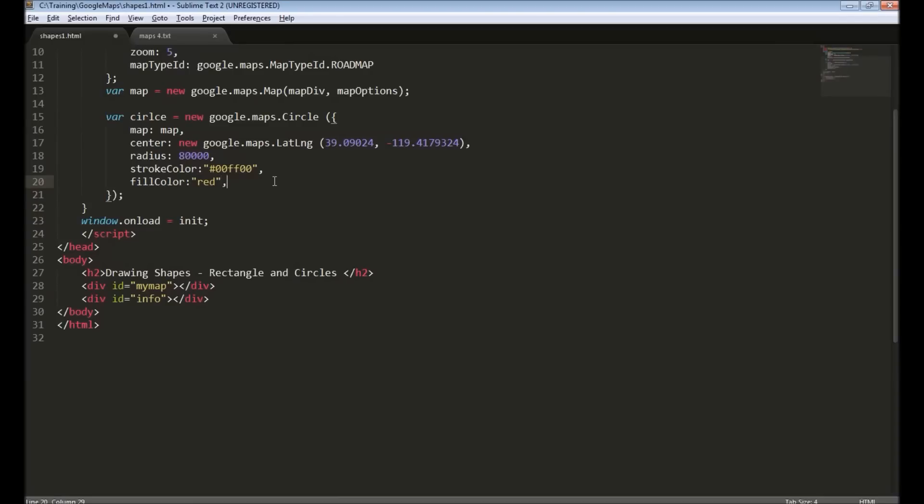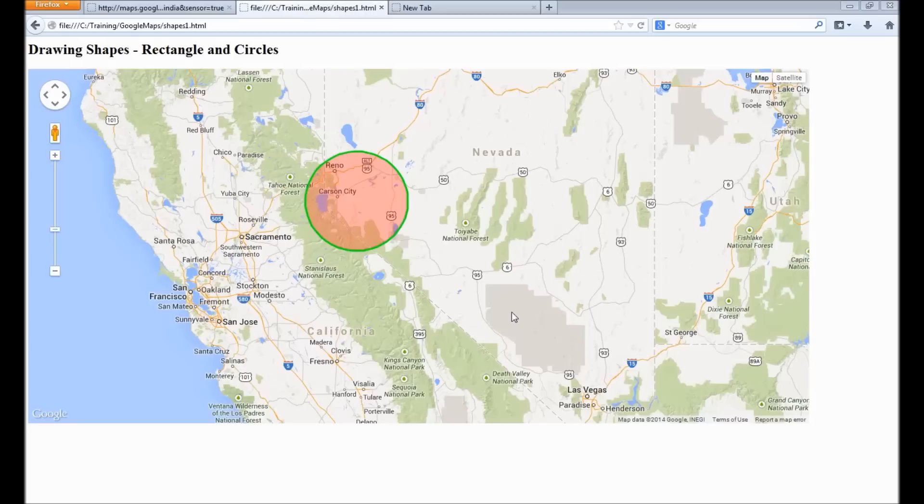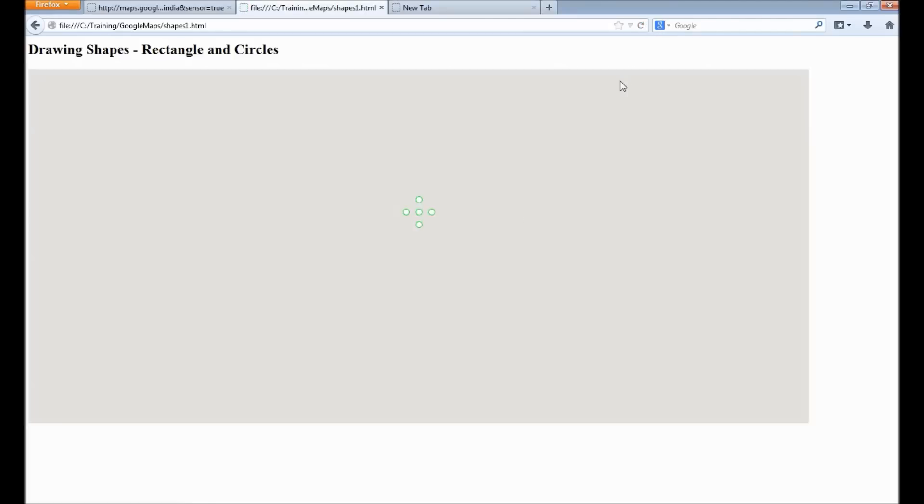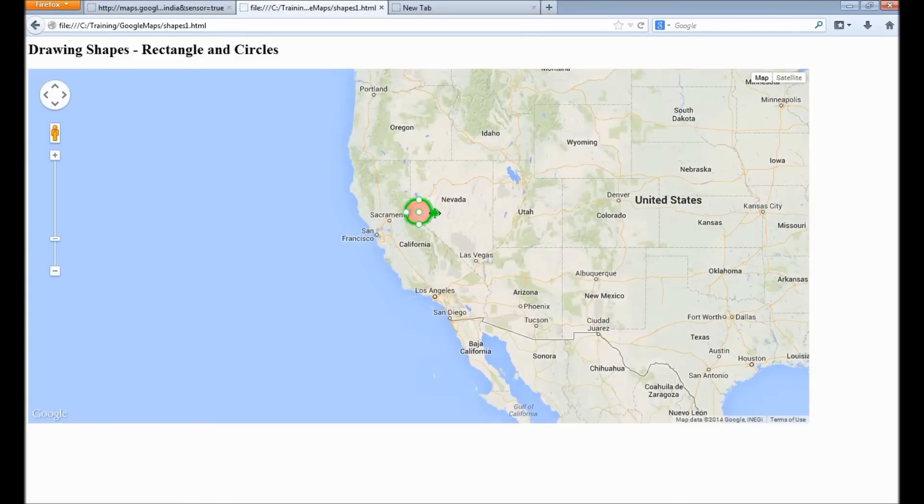We can make circle also editable. Editable true - this makes circle editable. Editable means user can resize the circle. Also you can move the circle around.